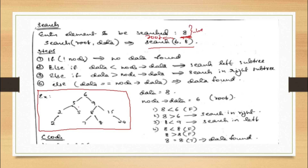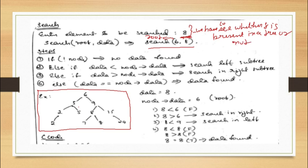We have to see whether 8 is present in the tree or not. There is a 4-step process. Step 1: if there is no node, then there is no data. Step 2 (else if): if data is less than node of data. Here, data is 8. Node of data is 6 — we are still at the root level only.